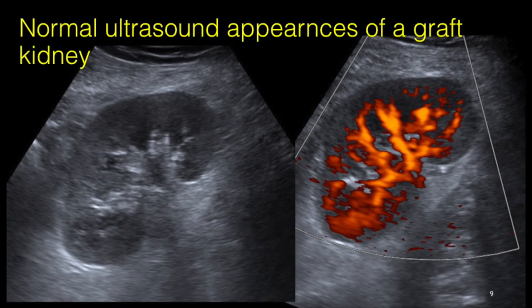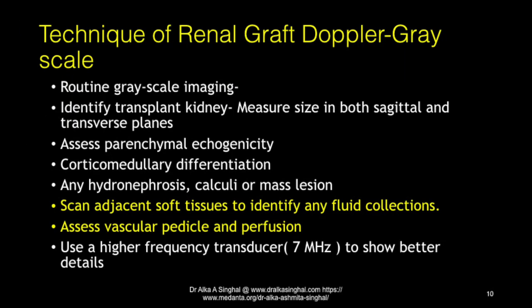How does the kidney look on grayscale? Similar to a native kidney. We assess the size, orientation, echogenicity, corticomedullary differentiation, any hydronephrosis, calculi, mass lesion, perinephric collection, and any vascular disturbances. We use the help of color, power, and spectral Doppler for further assessment. Our transducer frequency can be increased to a higher frequency transducer when permitted to get better image resolution.